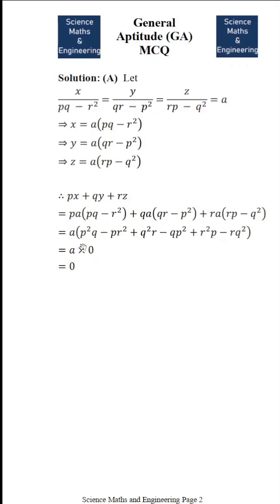So, if you take a common, then we get p square q minus pr square plus q square r plus qp square plus r square p minus rq square.